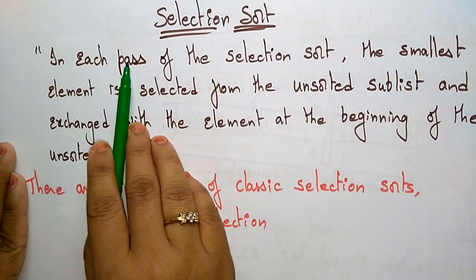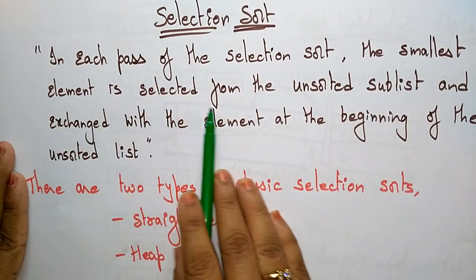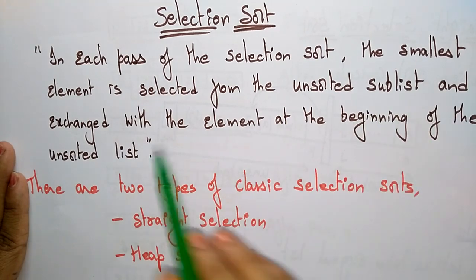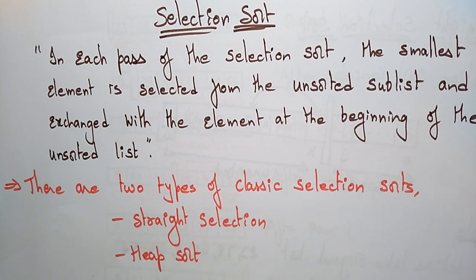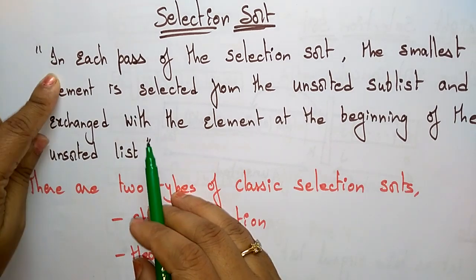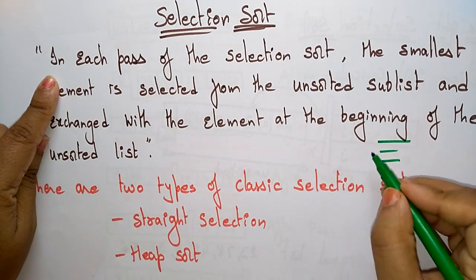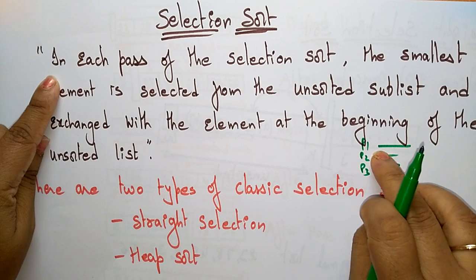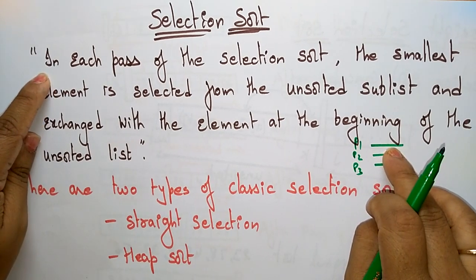In each pass of the selection sort, the smallest element is selected from the unsorted sublist and exchanged with the element at the beginning of the unsorted list. In each pass means in each data traversal — pass 1, pass 2, pass 3, like that. So in each pass of selection sort the smallest element is selected.